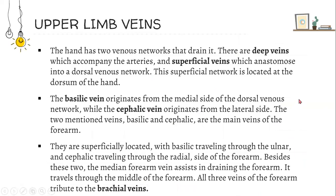Upper limb veins. The hand has two venous networks that drain it: deep veins which accompany the arteries, and superficial veins which anastomose into a dorsal venous network located at the dorsum of the hand. The basilic vein originates from the medial side of the dorsal venous network, while the cephalic vein originates from the lateral side. These two veins are the main veins of the forearm, with the basilic traveling through the ulnar side and cephalic through the radial side of the forearm. Additionally, the median forearm vein assists in draining the forearm, traveling through its middle. All three veins of the forearm tributate to the brachial veins.